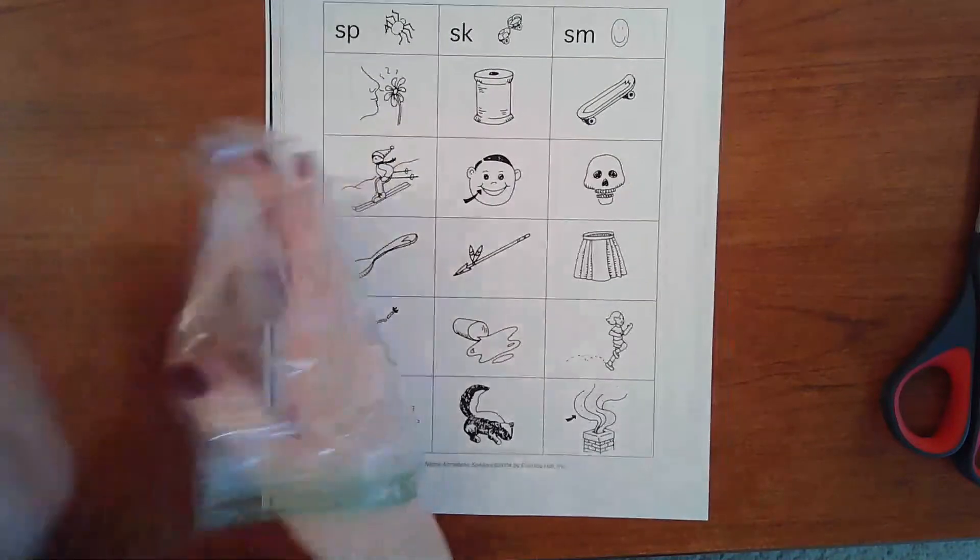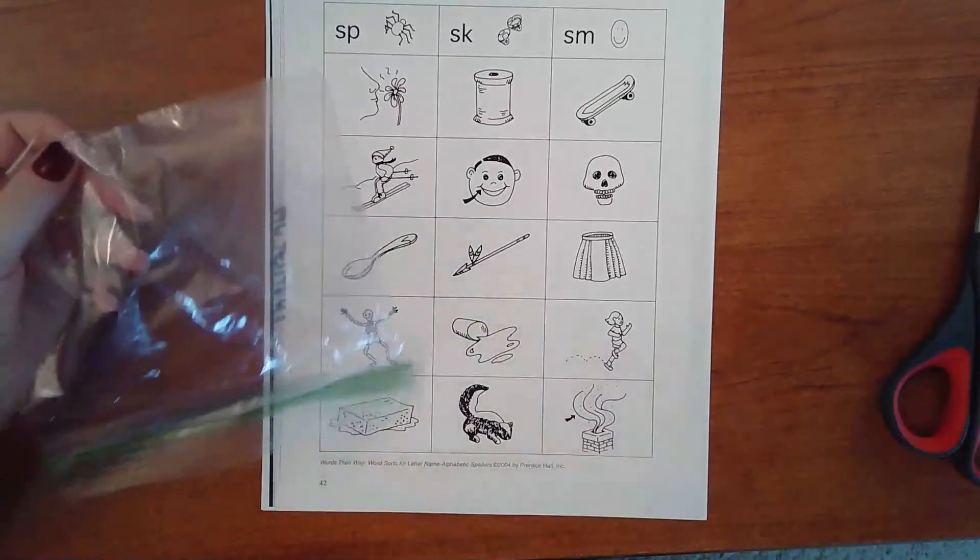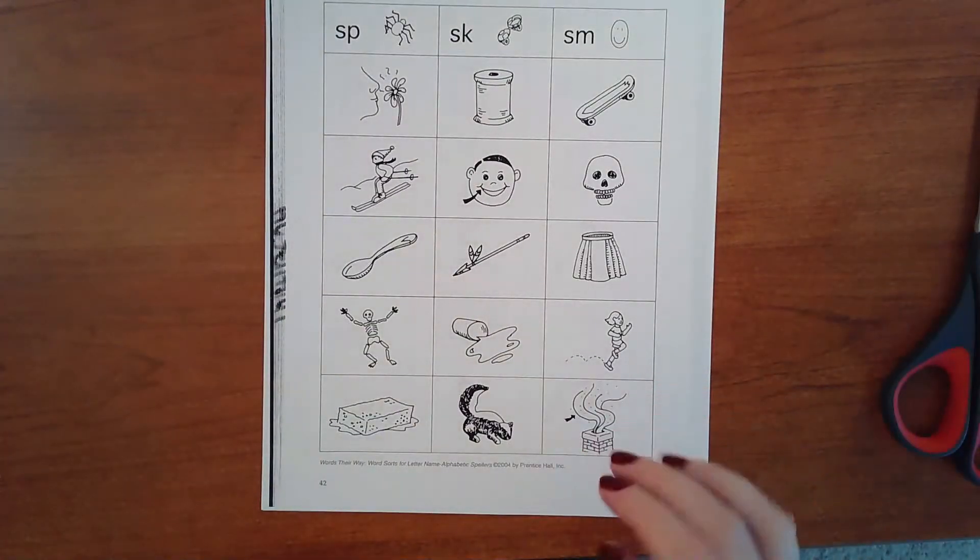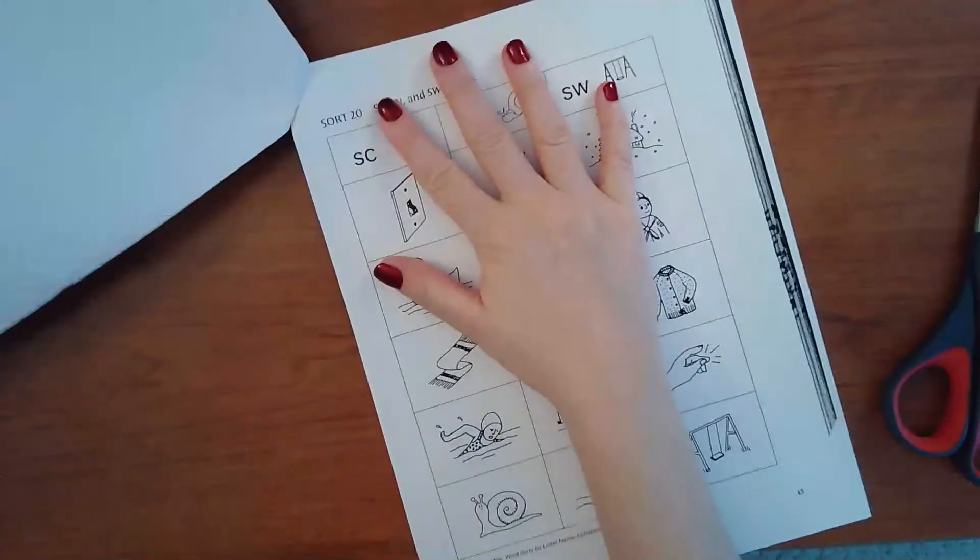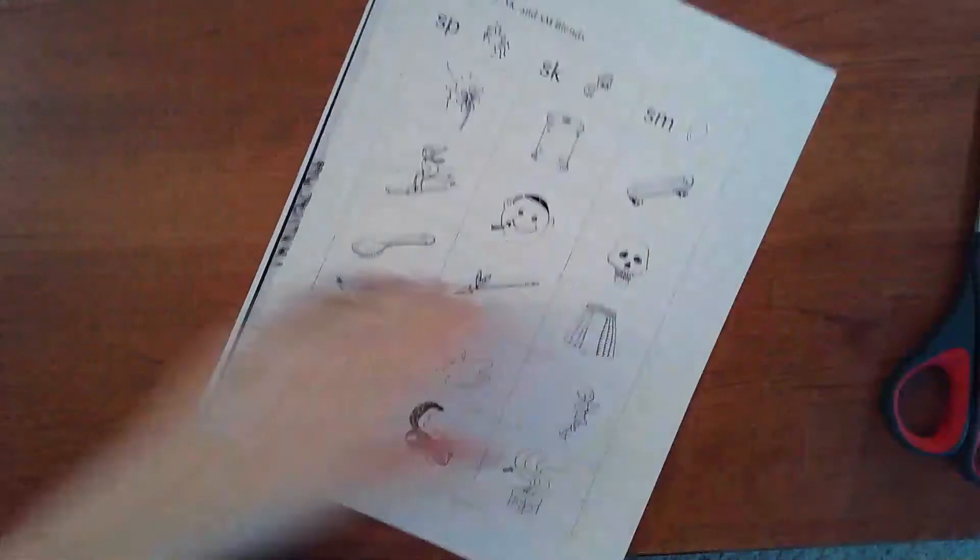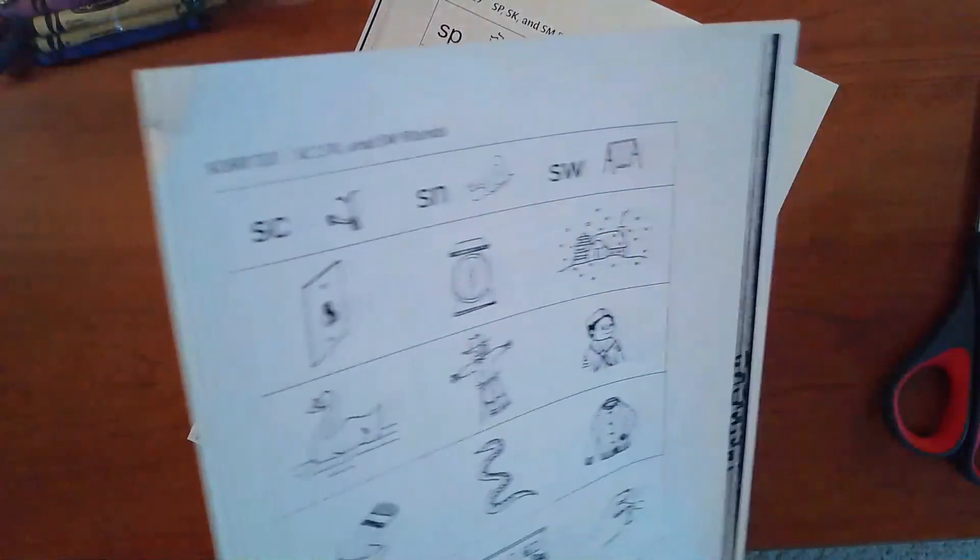Okay, so let's get started. We're gonna take out last week's sort and put it in the recycling, and then take off the sort we need this week and put the rest back in our word work folder for next time.